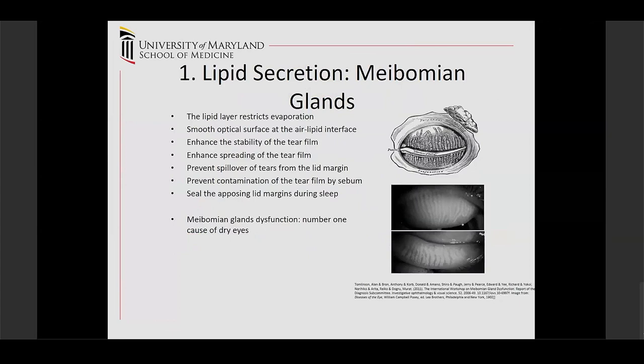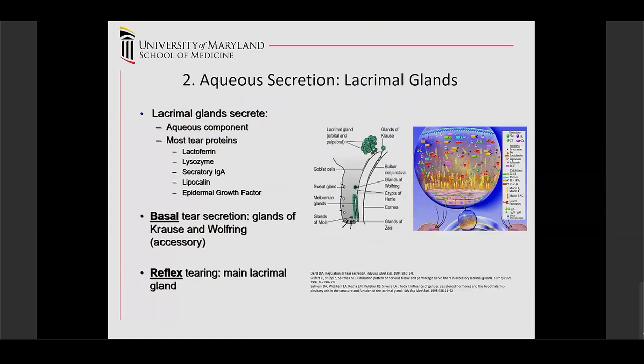It's pretty important for maintaining a good ocular surface. Meibomian gland dysfunction is the number one cause of dry eyes. As for aqueous secretion, that's from the lacrimal glands, which secrete most of the proteins found in the tear film. Basal tear secretion is from the accessory glands of Krause and Wolfring, and reflex tearing is from the main lacrimal gland.